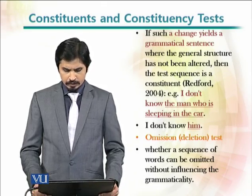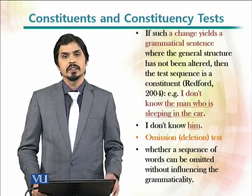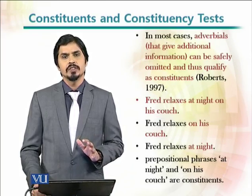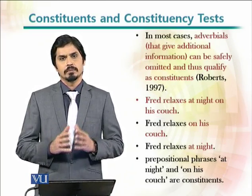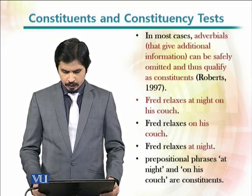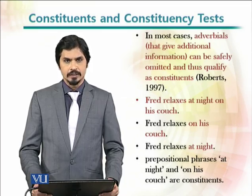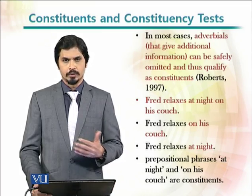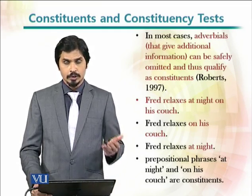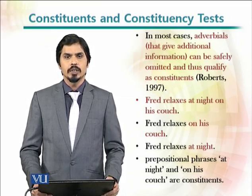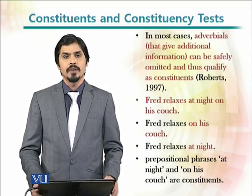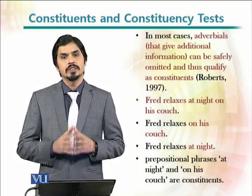Another type of constituency test is the omission or deletion test. This involves checking whether a sequence of words can be omitted without influencing the grammatical correctness of the sentence. For example, 'Fred relaxes at night on his couch' can become 'Fred relaxes on his couch' or 'Fred relaxes at night' — both prepositional phrases can be omitted and the sentences remain grammatically correct.